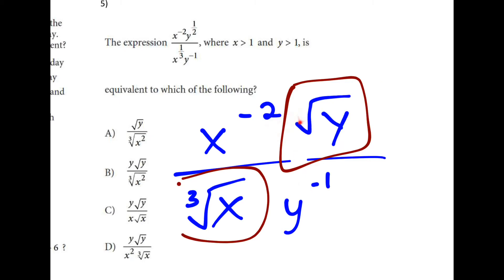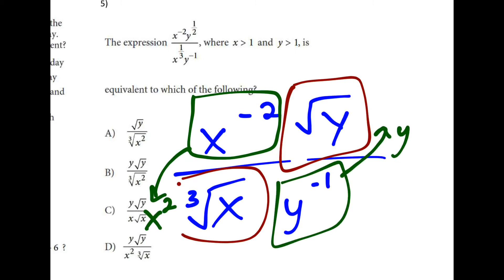So that leaves the negatives. And actually, all I have to do when I have negative exponents is just put them on the top or the bottom, flip them from where they're at. So this x to the negative 2 goes down to the bottom as x squared. And this y to the negative 1 goes up to the top as y to the first.